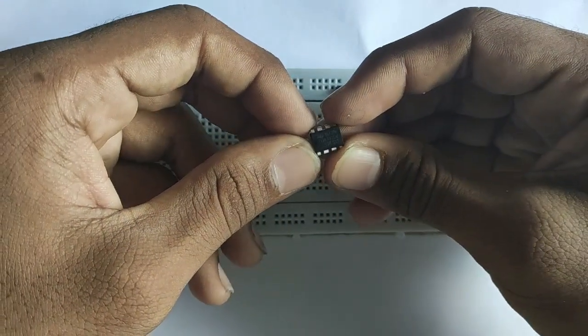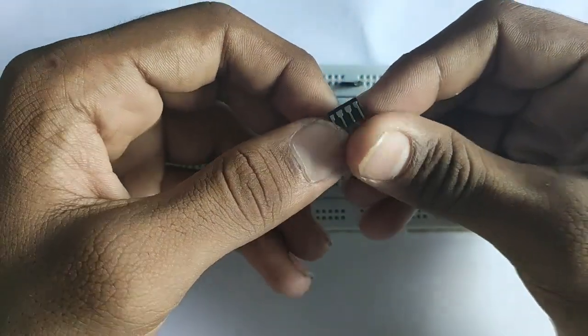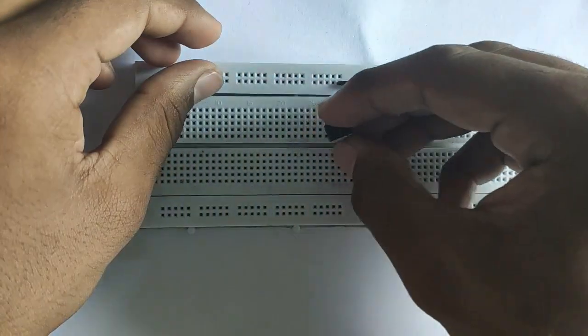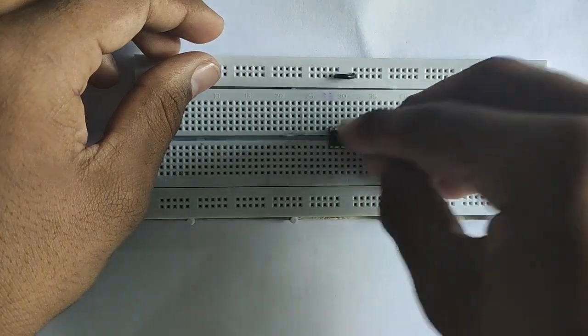Hi everyone. Today we are going to see how to do an inverting amplifier. First of all, let us take an IC741 sensor and fix it to the breadboard.